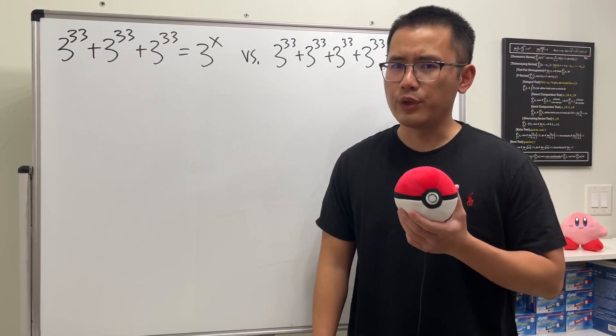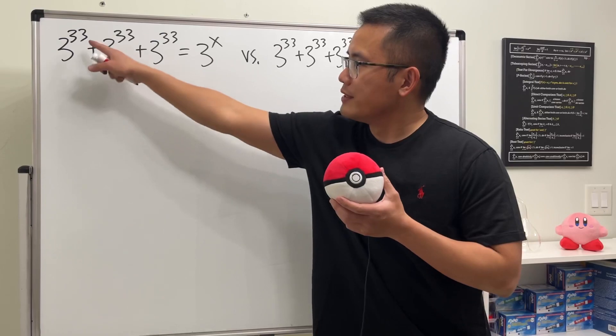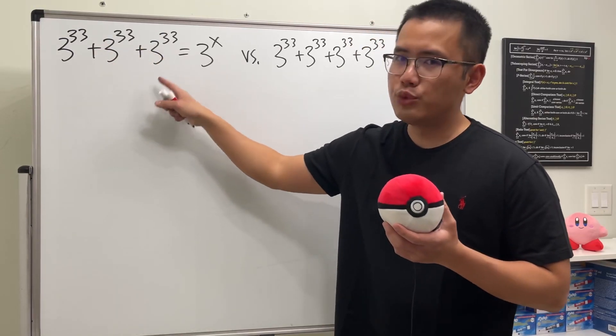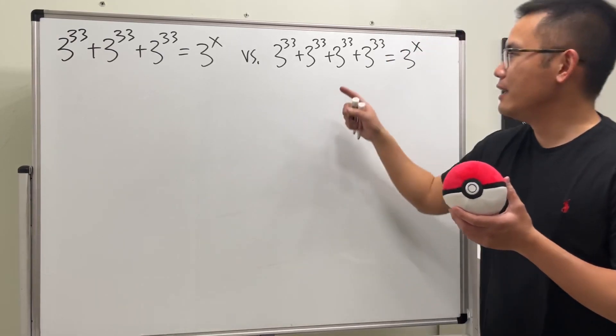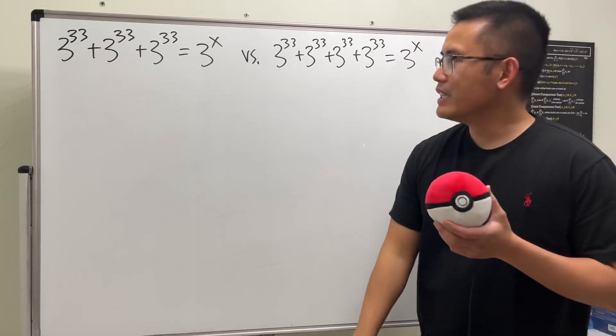I have two very interesting equations for you. The first one is 3^33 + 3^33 + 3^33 = 3^x, and the second one is four of these terms equal to 3^x.